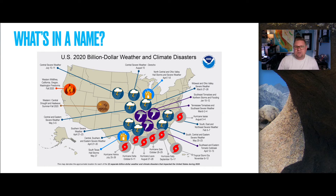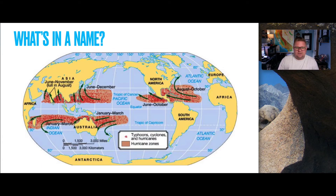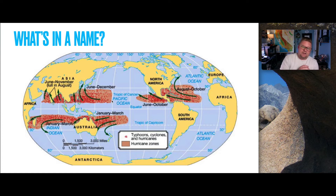We've learned that hurricanes, typhoons, and cyclones are found around the world in particular zones. As geographers, we can see spatial patterns — these storms are all found within the tropic regions, between equatorial areas and just above the tropics, not quite mid-latitude.